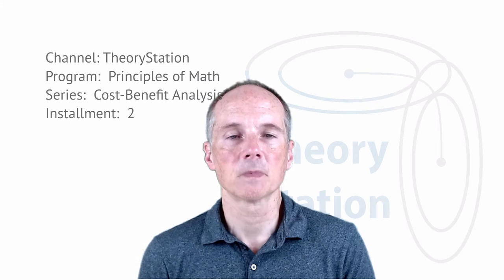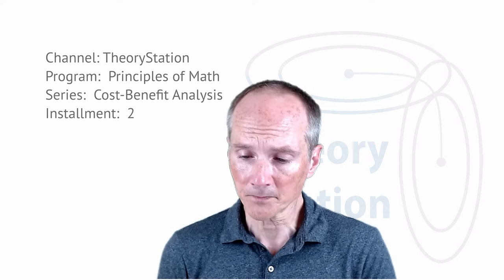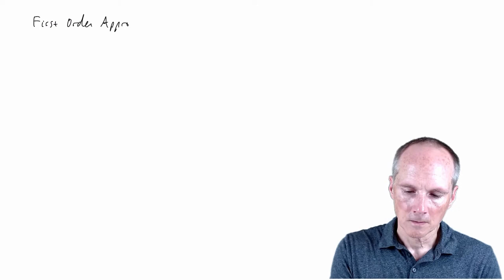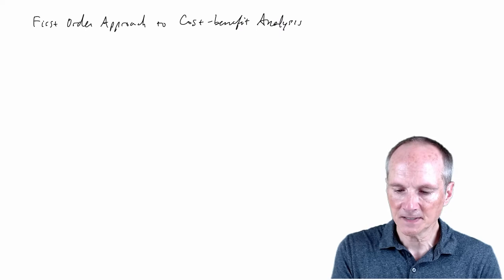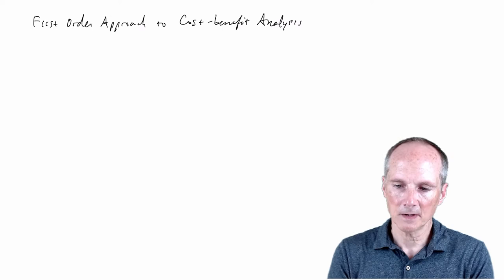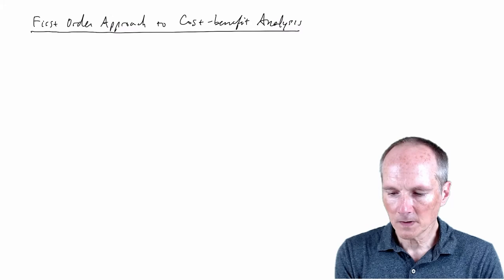Hi, this is Theory Station. I'm John Duggan. This is the Rational Choice Modeling Program. The series we're in is Cost-Benefit Analysis, and this is the second installment in the series. We're continuing from last time where we gave the basics of the model and some simplifying assumptions that make the model more usable.